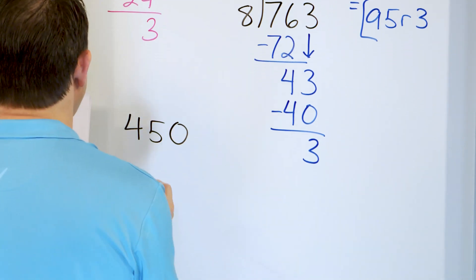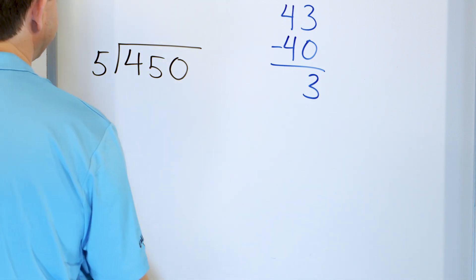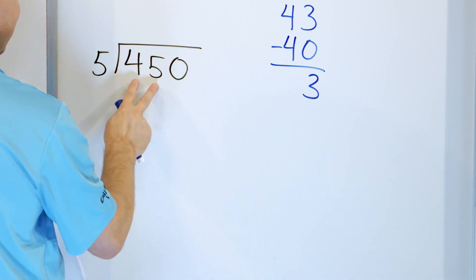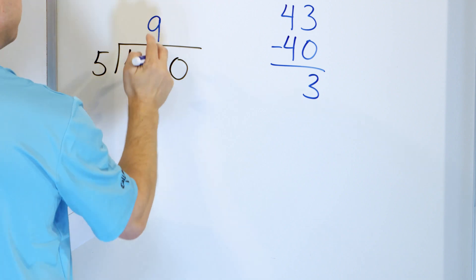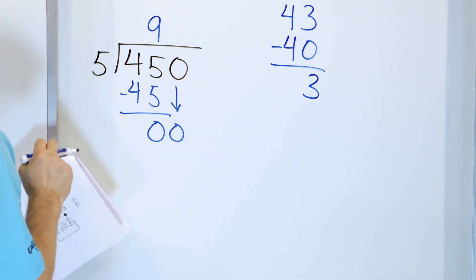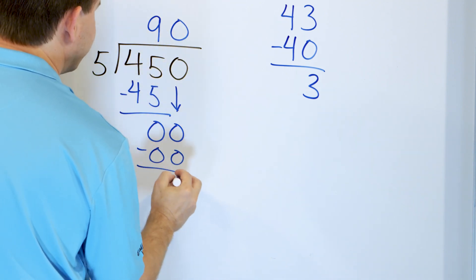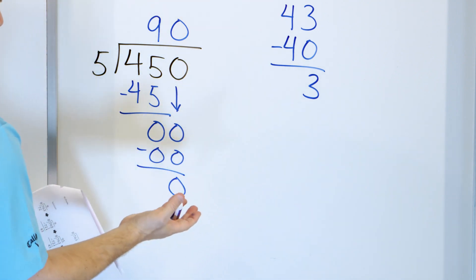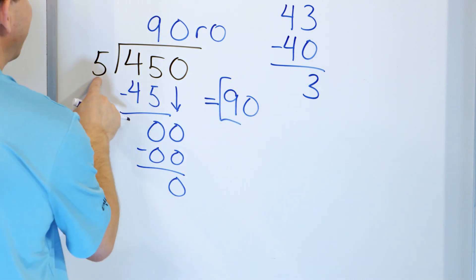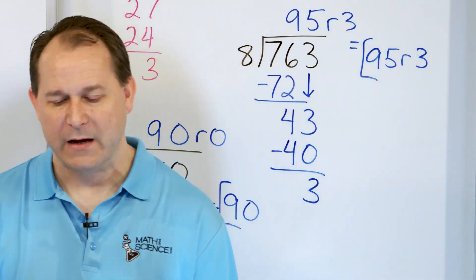What about 450 pizzas going to 5 different high school lock-ins? 5 times 1 is 5 — too big for the 4, so we expand and look at 45. 5 times 9 is exactly 45, so we put a 9 here, multiply, and subtract: 45 minus 45 is 0. After subtracting, I grab the next digit which is also a 0. 5 times something is 0 — only 5 times 0 is 0. So I multiply, subtract, and get 0 again. No next digit, and 0 is less than 5, so the remainder is 0. The answer is 90 — every high school gets 90 pizzas with nothing left over.